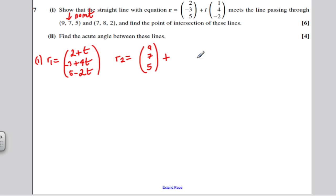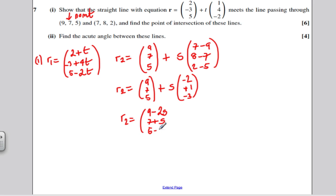And it's going to be plus s times the direction to get from there to there, that vector take away that vector. So that would be 7 minus 9, 8 minus 7, and 2 minus 5. And the vector equation of that line would therefore be R2 would be 9, 7, and 5, plus s times minus 2, minus 1, and minus 3. And combining those, like I did in this case here, I would get that to be 9 minus 2s, 7 plus s, and 5 minus 3s.